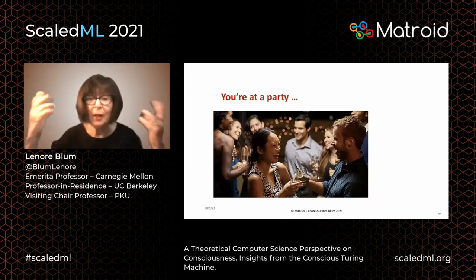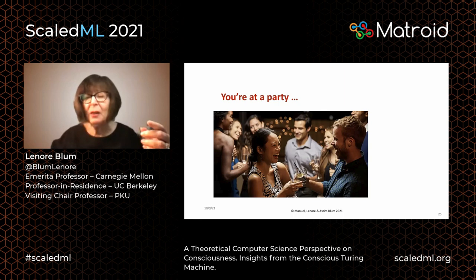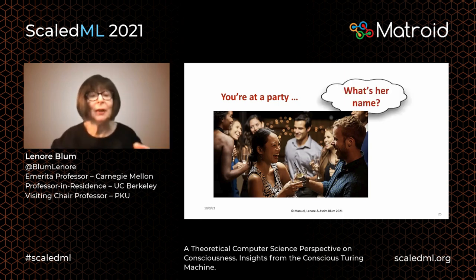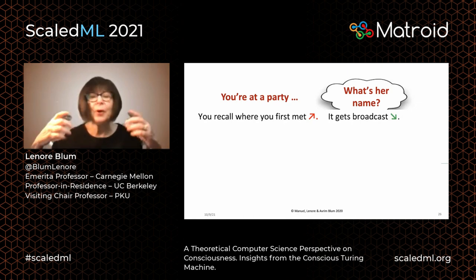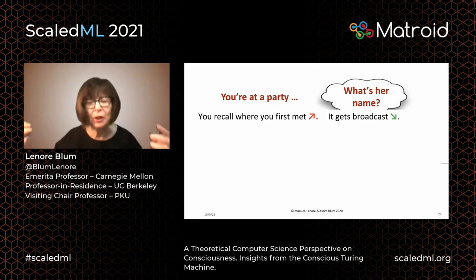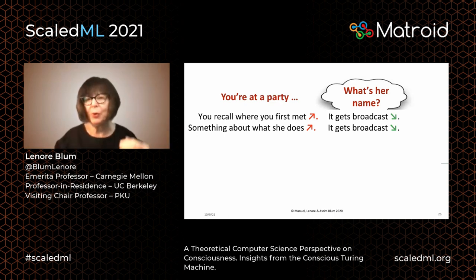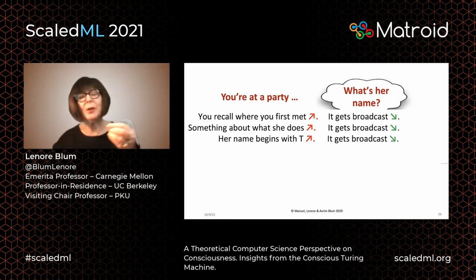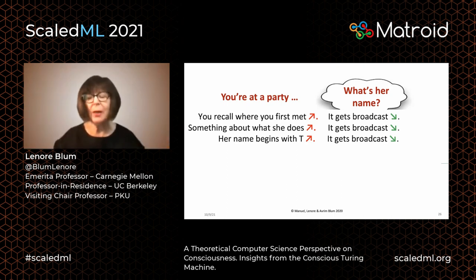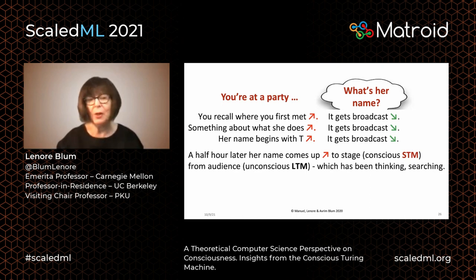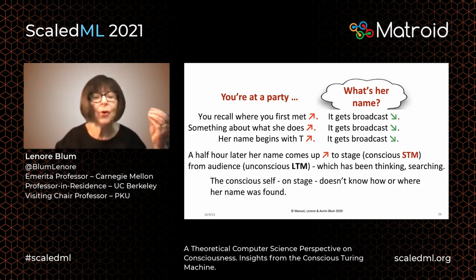Maybe this has happened to you. You're at a party, you see somebody you know, but you can't remember her name. Then a half hour later, when you're home, her name pops up — it's Tina. What's going on? You recall where you first met, perhaps in a computer science class, and that goes up to short-term memory, which gets broadcast down to all your long-term memory processors. Then one of your processes recalls she's in machine learning — that goes up to short-term memory and gets broadcast down. Her name begins with S — or maybe T. These get broadcast in turn. A half hour later, her name comes up to the stage from the audience, which has been thinking and searching. The conscious self on stage doesn't know how or where her name was found.